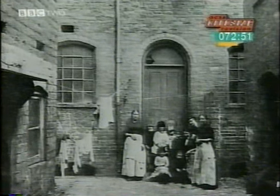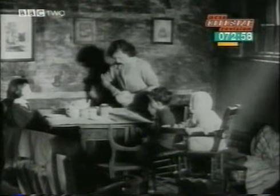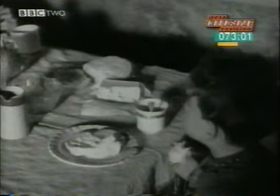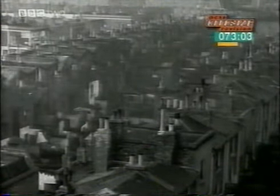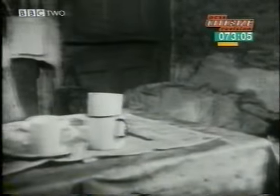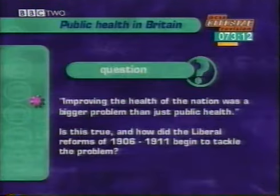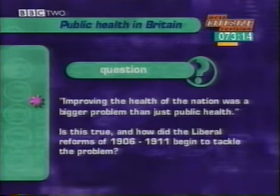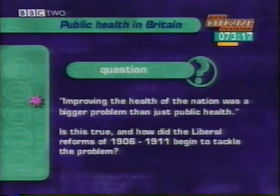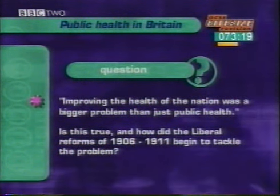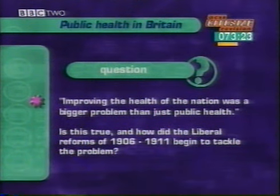Yet even at the turn of the 20th century, there were still very high levels of infant mortality. There was also a new Liberal government ready to intervene much more directly in the health of the nation. As you watch the next clip, make a plan for an essay in answer to the following question — one you could well come up against in the exam: 'Improving the health of the nation was a bigger problem than just public health. Is this true, and how did the Liberal reforms of 1906 to 1911 begin to tackle the problem?' You should plan to write one and a half to two sides on this question, which would be worth about 12 marks.